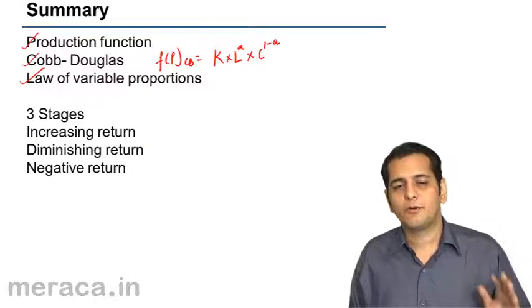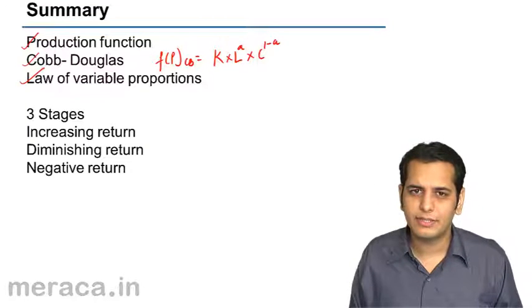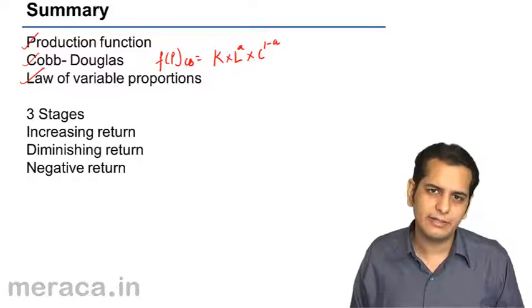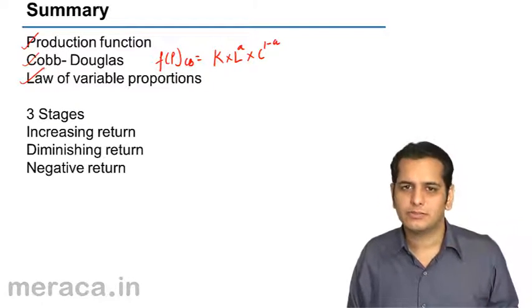initially the production increases at an increasing rate. Later on, it increases at a diminishing rate and finally it starts to decrease.